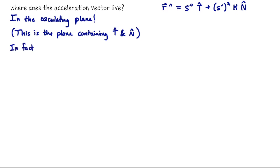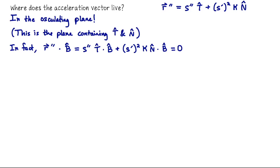In fact, the dot product of the acceleration vector with the binormal vector B is zero, since r″·B = s″(T·B) + (s′)²κ(N·B) = 0. Since B is perpendicular to the osculating plane, if we sketch a space curve living in the plane of the screen, the binormal vector would be pointing directly out of or into the screen.